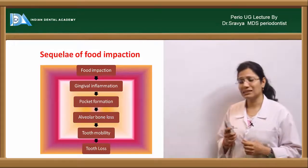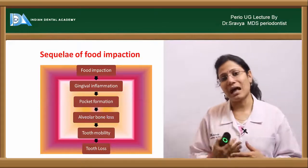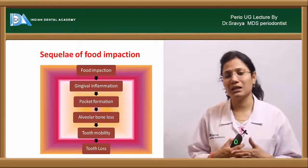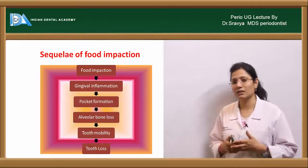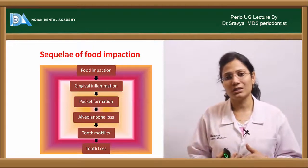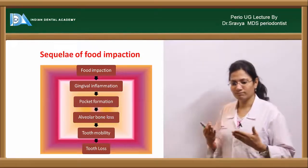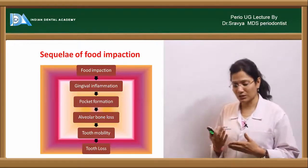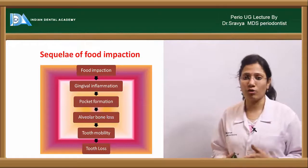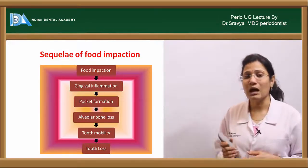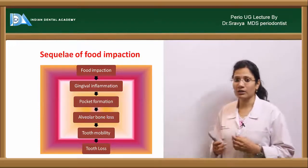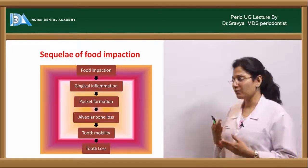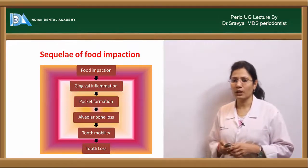What is the importance of food impaction and what are its sequelae? Over a period of time, food keeps getting impacted in the interproximal areas, causing gingival inflammation. This further progresses to deepening of the gingival sulcus leading to periodontal pocket formation. Once pocket formation results, more food becomes impacted, leading to alveolar bone loss. Once the alveolar bone starts resolving, the result is tooth mobility and eventually tooth loss.